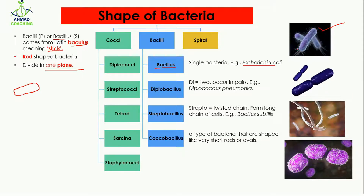An example of bacillus is Escherichia coli. Here you can see only one single stick-like structure. In the case of diplobacillus, 'diplo' means two, so two bacilli combine together — one bacillus and the other bacillus joined — forming diplobacillus.